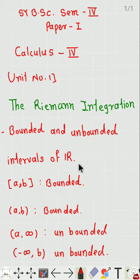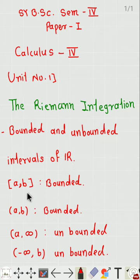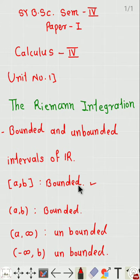Bounded and unbounded intervals of the set of real numbers. The first interval is a closed interval [a, b], and that interval is bounded — it has a lower bound and an upper bound, therefore it is bounded. The second interval is the open interval (a, b), and that interval is also bounded.